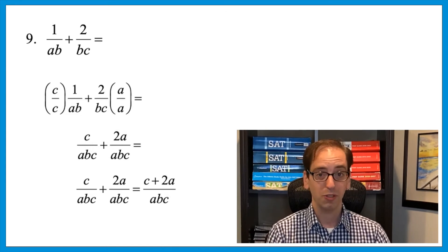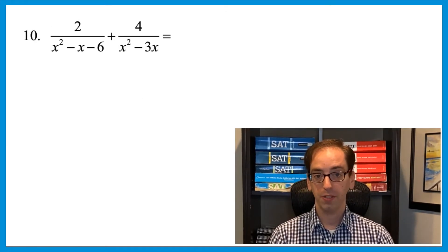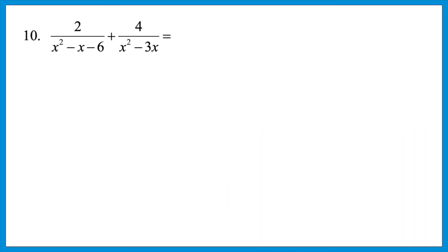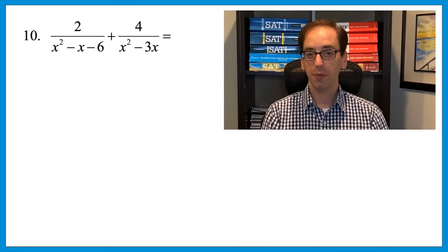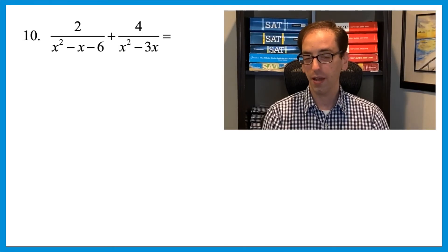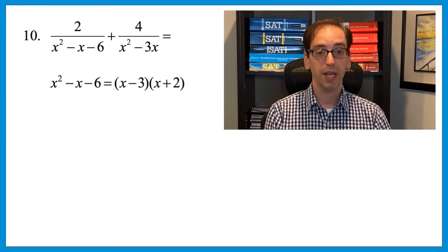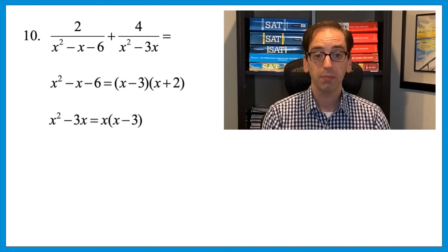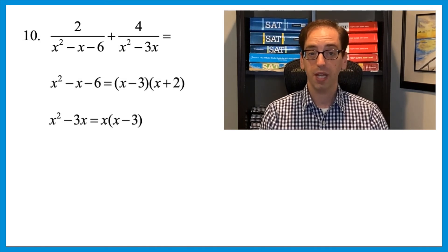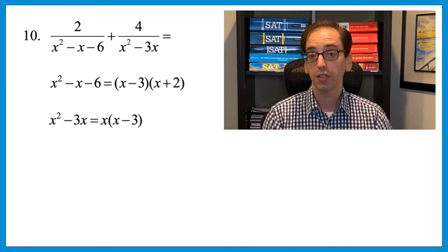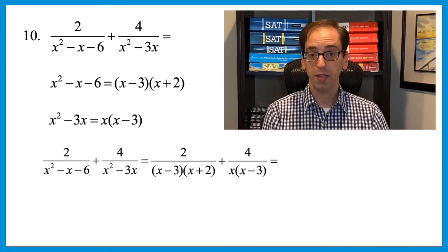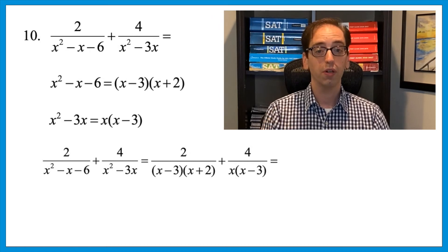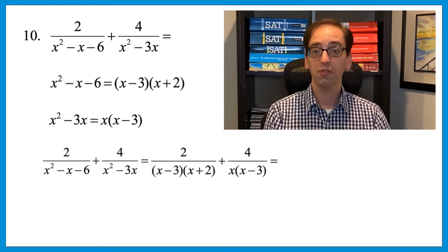And now let's kick it up a notch. 2 over x squared minus x minus 6 plus 4 over x squared minus 3x. Little harder, give it a try. Let's just make sure that we know what the first step is before we get to common denominators. You have to factor both of these denominators. That first trinomial, x squared minus x minus 6, would factor as x minus 3 and x plus 2. The second one can factor by taking out a GCF. It becomes x times x minus 3. So the original expression would now read 2 over x minus 3 times x plus 2 plus 4 over x times x minus 3. Now press pause and give it a shot.